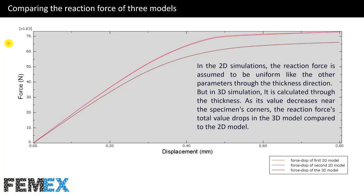Now I want to compare the reaction force of three models. Here we have the force-displacement curve of the first and second 2D models, and the force-displacement curve of the 3D model. They are similar to each other and have similar trends. In the 2D simulations, the reaction force is assumed to be uniform through the thickness direction. But in 3D simulations, it is calculated through the thickness. As its value decreases near the specimen's corners, the reaction force's total value drops in the 3D model compared to the 2D model. The 3D model calculation is more accurate.